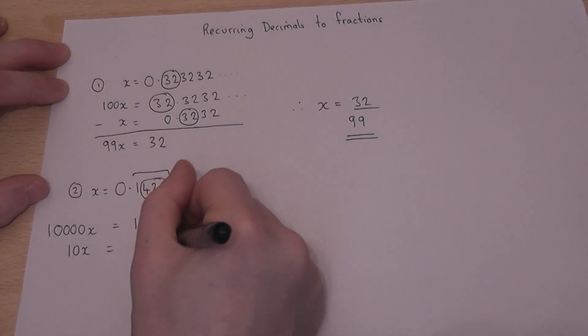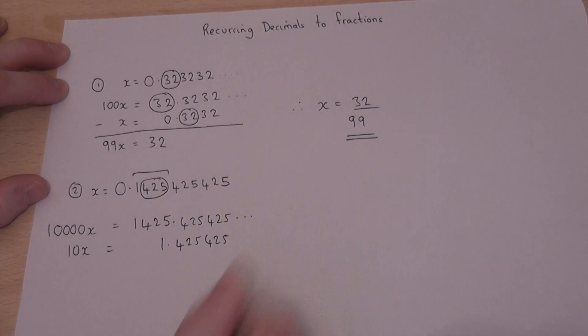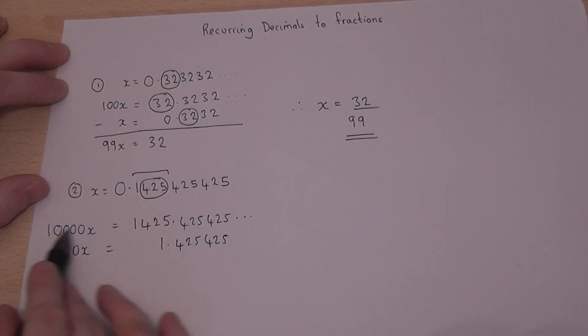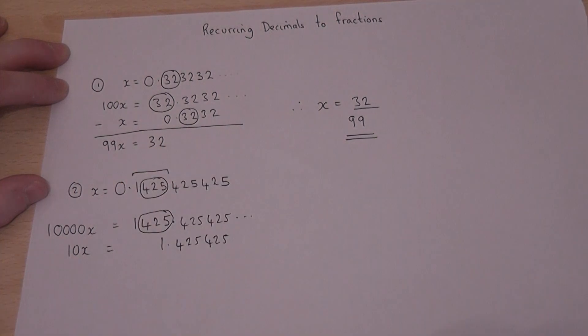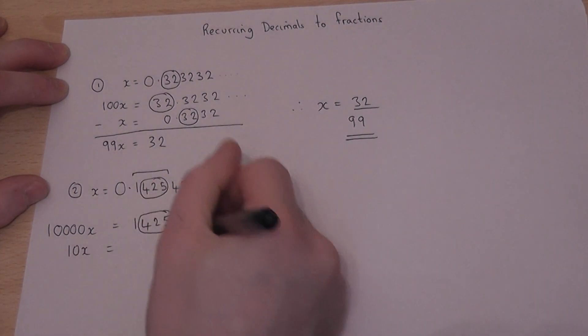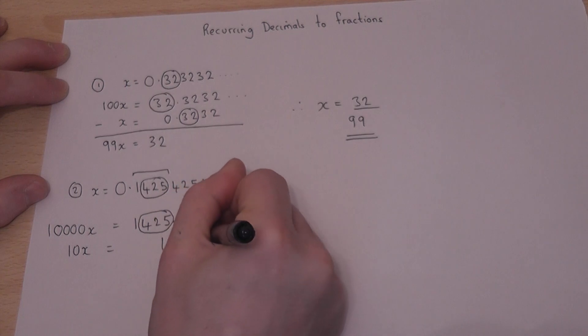Then I'll have 1.425425. So in the top line, the circle part is just to the left of the point. In the bottom part, it's just to the right.